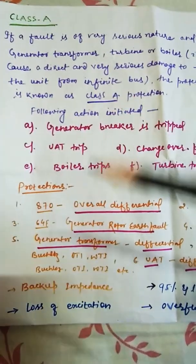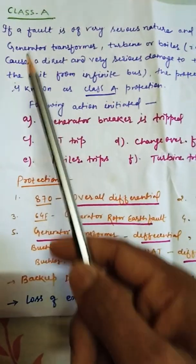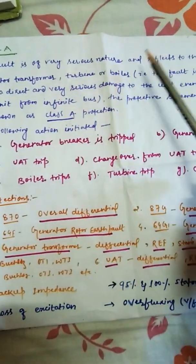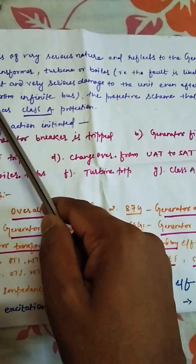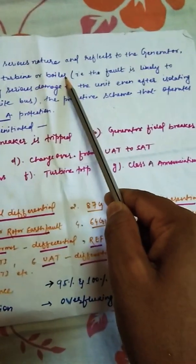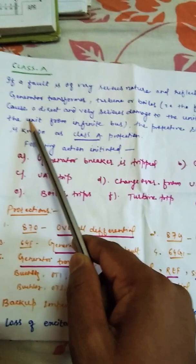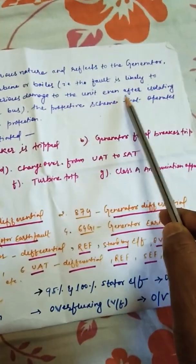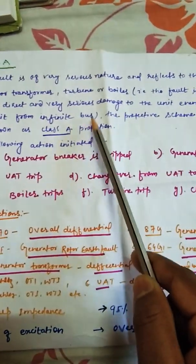Class A, Class B, and Class C. If a fault is of a very serious nature and directly affects the generator, generator transformer, turbine, or boilers — that is, the fault is likely to cause direct and very serious damage to the unit even after isolating the unit from the infinite bus — the protection scheme that operates is known as Class A protection.